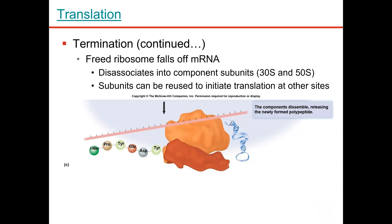When translation stops, the amino acid sequence — that polypeptide — can then fold up into its functional form, whatever protein it is. The ribosomes can come apart and they're free to attach to a new messenger RNA. The messenger RNA can be read again until it is degraded.